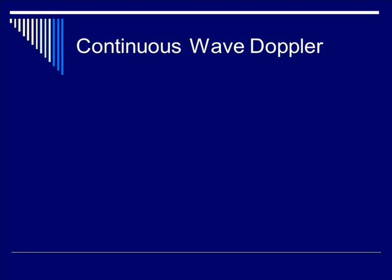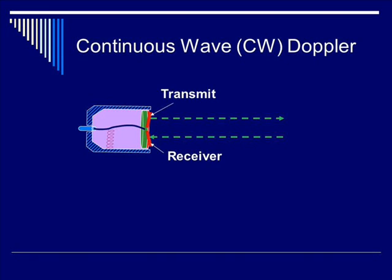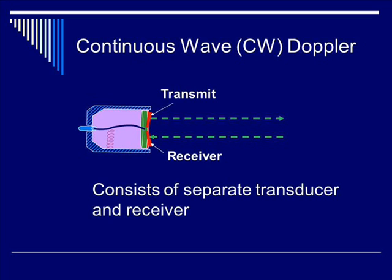Let's talk about continuous wave Doppler. As you recall from our earlier lectures, the transducer typically handles both transmission and reception. But in continuous wave Doppler, you have a separate transducer and receiver, as indicated in the diagram.